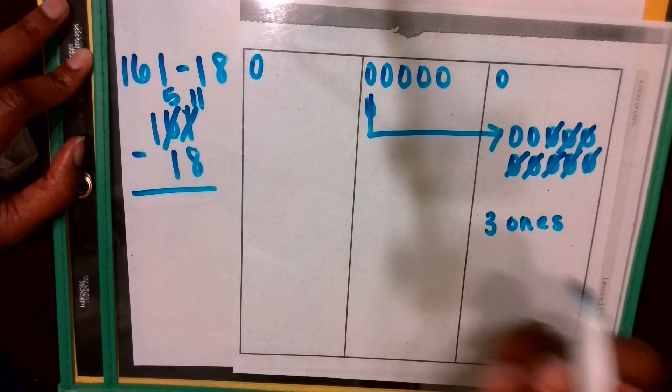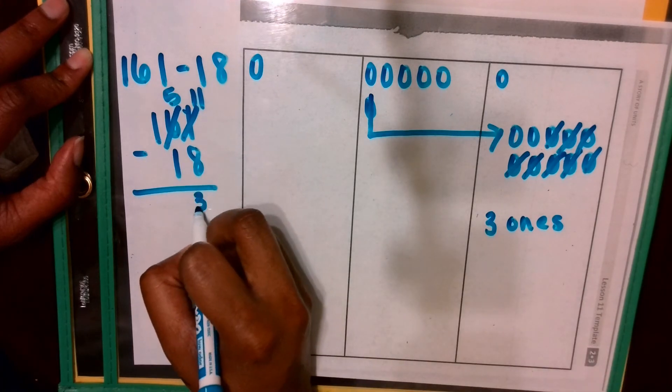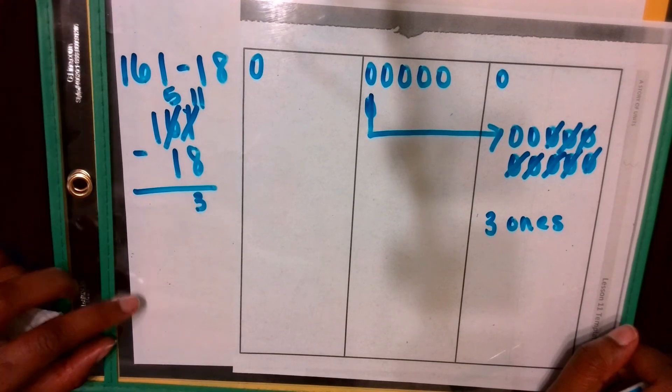Don't forget, whatever you do in your place value chart, you must also show in your vertical form. I now have 3 ones.